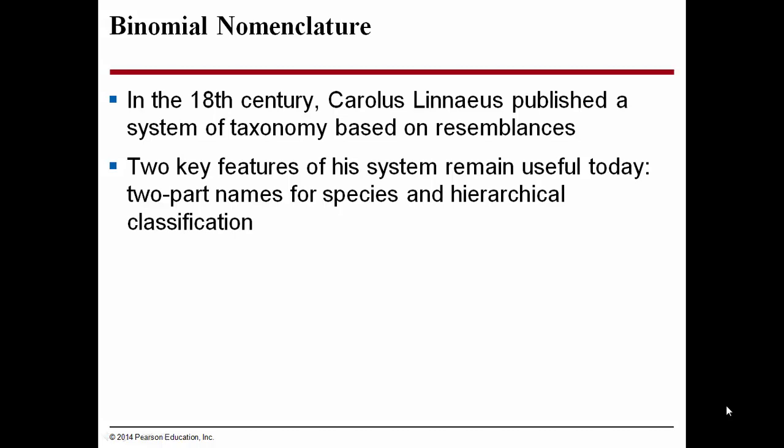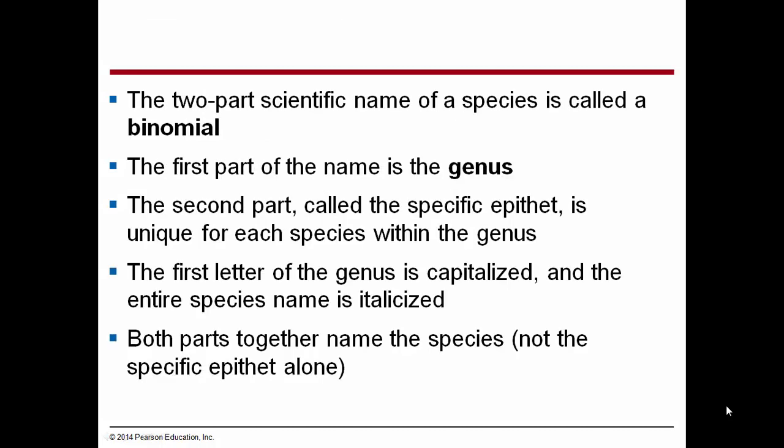The two-part scientific name of a species is called the binomial, hence the term binomial nomenclature. The first part of the name is the genus. The second part is called the specific epithet, which is unique for each species within the genus. For human beings, we are Homo sapiens, and there is also a closely related species now extinct known as Homo neanderthalensis. We share the same genus but are designated as a different, distinct species. The first letter of the genus is capitalized, and the entire species name is italicized or underlined. Both parts together name the species — you can't just say sapiens, you have to say Homo sapiens.